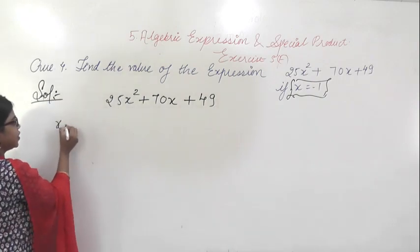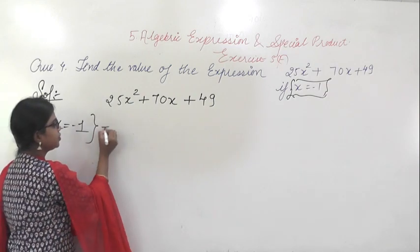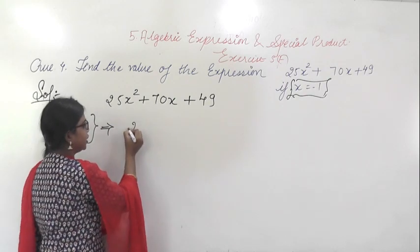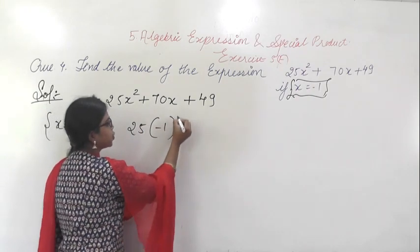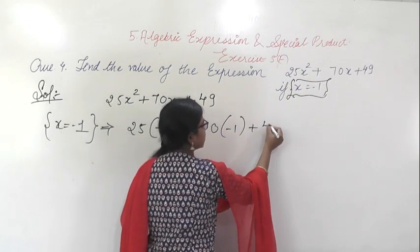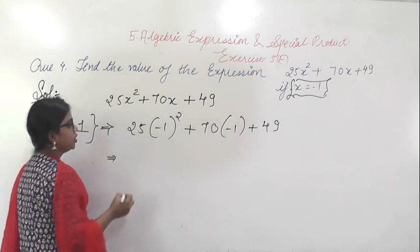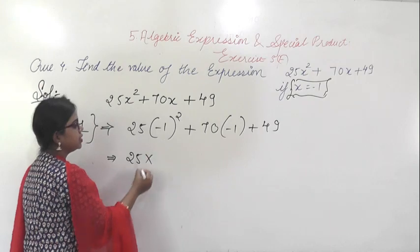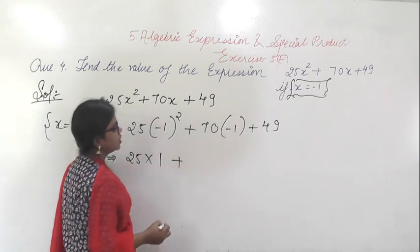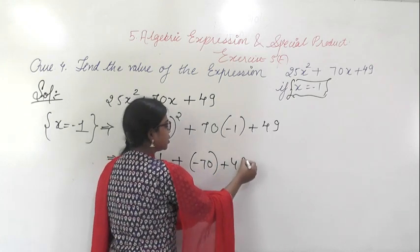Here in the place of x you have to put x = -1. Just substitute the value of x = -1 in this expression. You will get 25(-1)² + 70(-1) + 49. So (-1)² will be 1 only, so you get 25(1), and 70 × (-1) means this will be -70, plus 49.